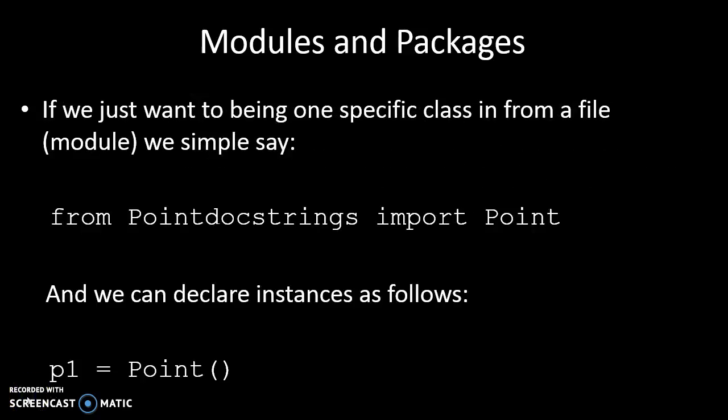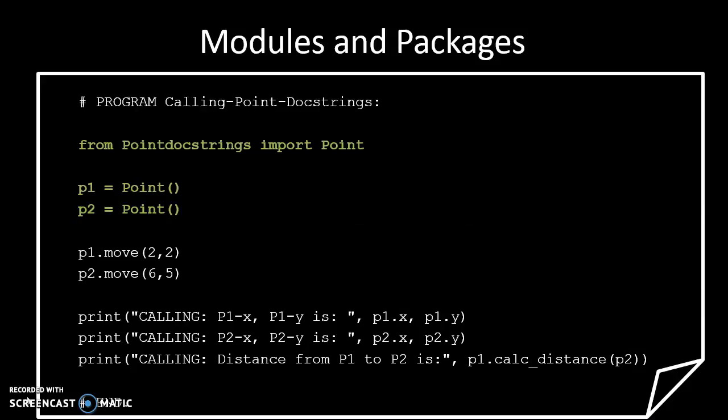If we want to just take a specific class from that file, all we say is from Pointdocstrings import Point, and then we declare instances of Point as normal. Let's have a look at that in code. Exactly the same as normal. The only difference is instead of importing something from the math library, we're just importing something from another file in the same directory as the file we're calling it from.